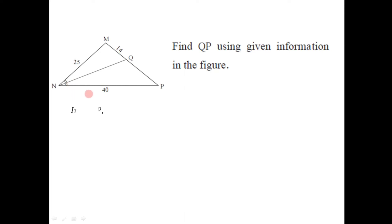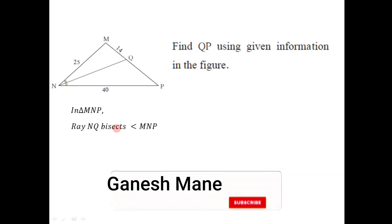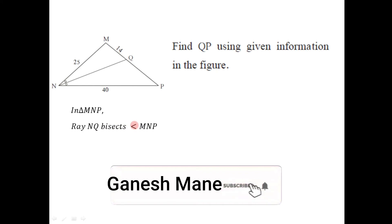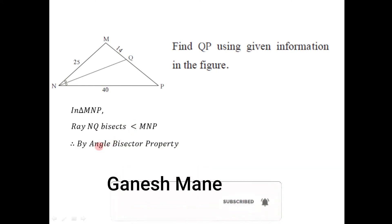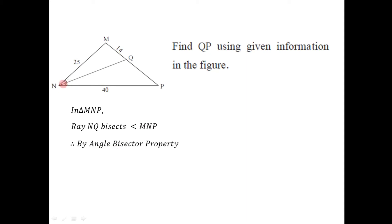Since an angle bisector is given, we should use the angle bisector property. In triangle MNP, ray NQ bisects angle MNP. The angle is MNP, so the side opposite to it is MP. This angle bisector divides side MP in the proportion of the remaining two sides, which are MN and NP. So by the angle bisector property, MN divided by NP equals MQ divided by QP.